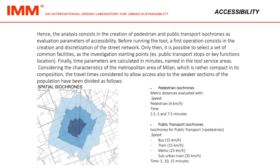Pedestrian isochronomes: metric distance evaluated with speed — pedestrian 4 km per hour — time 2.5, 5 and 7.5 minutes. Public transport isochronomes: isochronomes for public transport plus pedestrian. Speed: bus 15 km/h, tram 15 km/h, metro 25 km/h, suburban train 35 km/h. Time: 5, 10 and 15 minutes.